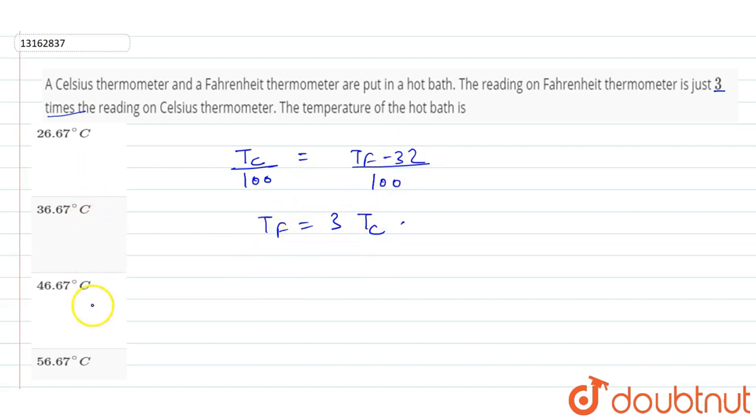So, Tc by 100 will be equal to 3Tc minus 32 upon 100. Sorry, here is 180.